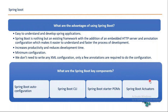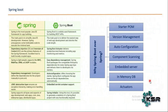Why choose Spring Boot over Spring? With Spring Boot's pom.xml, you don't need to find which JARs are compatible — version management and compatibility issues are removed. Auto configuration handles everything. Component scanning lets you specify a package and scan it rather than going through each file. The embedded server is a built-in feature of Spring Boot not available in Spring framework. Built-in memory database like H2 is available in Spring Boot, whereas in Spring you configure it manually.